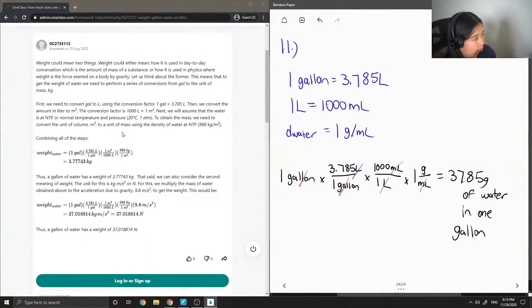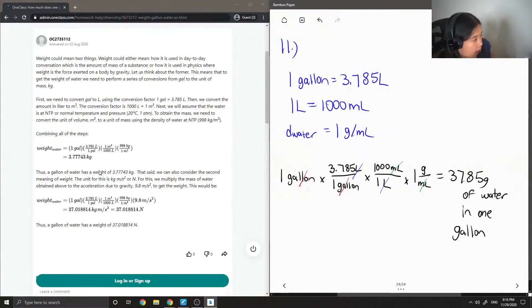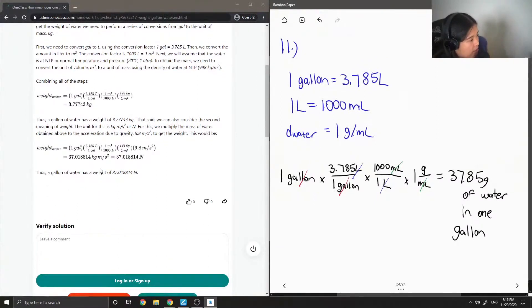Next, we will assume that the water is at normal temperature and pressure, and to obtain the mass we need to convert the unit of volume, meters cubed, to a unit of mass using the density of water at normal temperature and pressure. So they used 998. I just used, well in this case, like a thousand kilograms per meter cubed. So they combined all the steps and ended up getting 3.77743 kilograms, so this is pretty much similar to my answer as well.